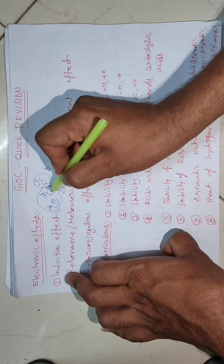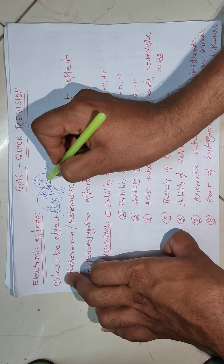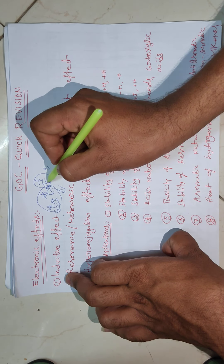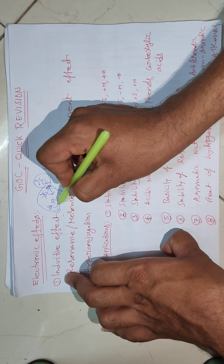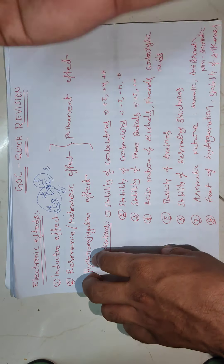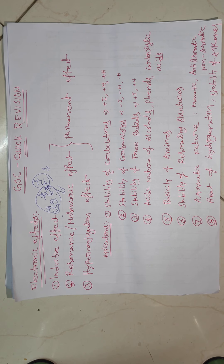The inductive effect decreases with increasing distance. Fluorine directly attached to carbon creates a more positive charge on that carbon, but creates a very small magnitude of positive charge on the next carbon. So the inductive effect is distance-dependent. Groups which release electron density are plus-I groups; groups which attract electron density are minus-I groups. The order of different plus-I and minus-I groups is given in class.